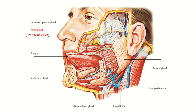From the parotid gland, we can see a duct arises and this duct is the parotid duct. Another name of the parotid duct is Stensen's duct. We can see this duct crosses the masseter muscle, then pierces the buccinator muscle and finally opens here, opposite the second molar tooth.